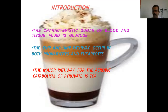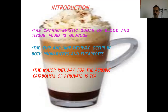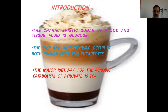This metabolism of glucose is divided into two parts: one is called catabolism and another is called anabolism. Catabolism is the breaking down of sugar molecules or any substance, which is utilized in the metabolism of the cell. Anabolism is the building up of molecules which are utilized by the cells.